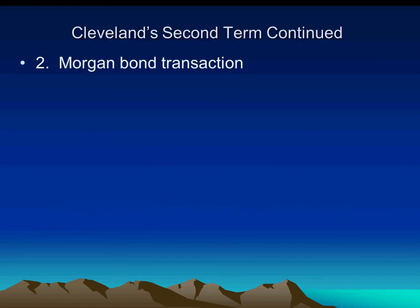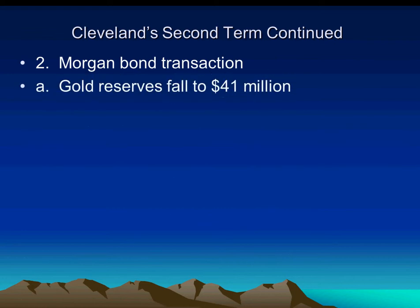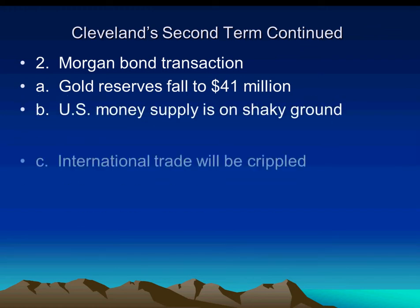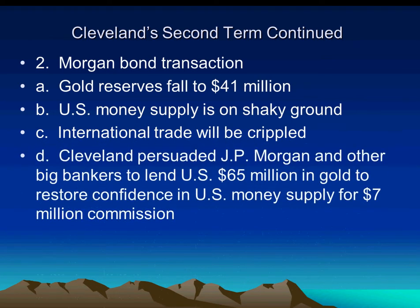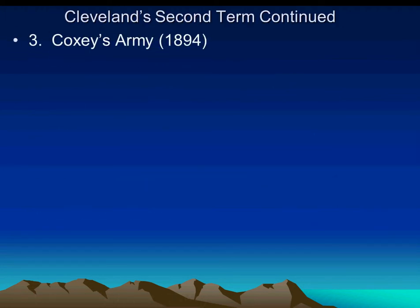William Jennings Bryan objects. There was the Morgan bond transaction. Because the gold reserves fell to about $41 million, the economy was a little shaky. Overseas trade was crippled because they weren't going to take paper money. J.P. Morgan and some other bankers step up and lend the government $65 million in gold. They didn't do this out of the goodness of their hearts — they got a $7 million commission. But it stabilized the economy and things moved on.